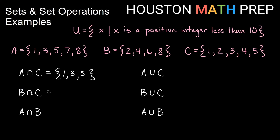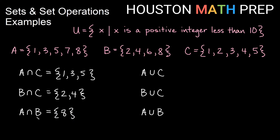B intersect C — think of it as B and C. What is in B and also in C? 2 is in B and C, 4 is in B and C, but 6 and 8 are not. So we'll just have 2 and 4 for B intersect C. For A intersect B, we want elements in A and also in B. A has 1, 3, 5, 7, 8 — mostly odd numbers plus 8. B has 2, 4, 6, 8 — even numbers plus 8. The only thing they share is the number 8. So we just have one element in that intersection: A intersect B is just {8}.